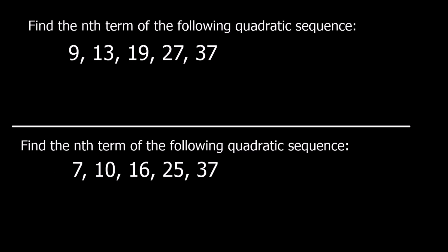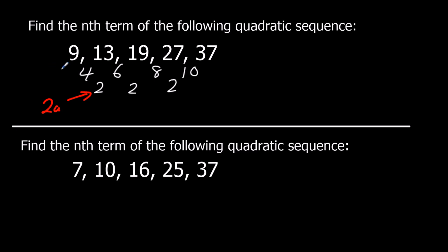Okay, here are two for you to try. Pause the video and give them a go. For the first one, the first differences are 4, 6, 8, 10 and the second differences are 2, 2, 2. We label these as 2a, 3a plus b, and a plus b plus c.